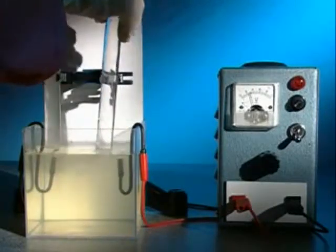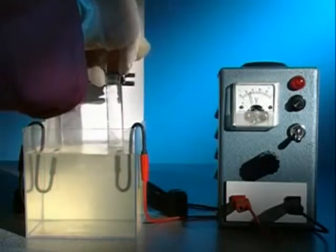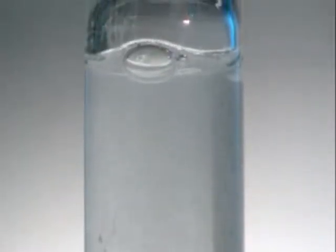To collect the gases, a test tube full of sodium chloride solution is placed over each electrode. Gas displaces the solution and collects in the top of the tube.